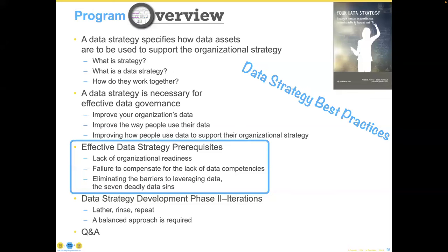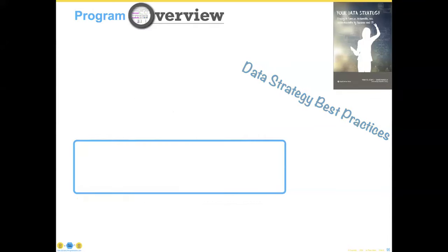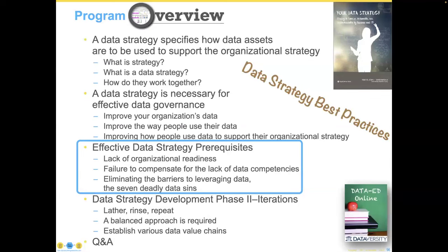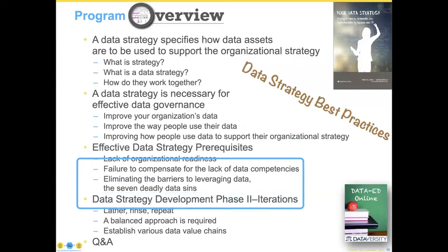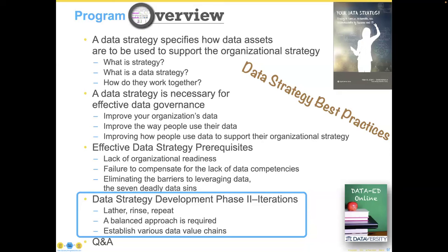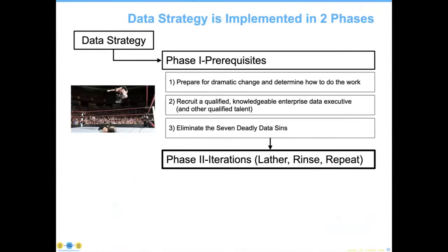Now we get to the last phase: where are we going to find out specifically what it means to go through these strategic cycles? I call it lather, rinse, and repeat. You've eliminated all of the things you need to for prerequisites, including the seven deadly sins, have qualified data leadership, and implemented change management and program management professionals to help you out with this process.